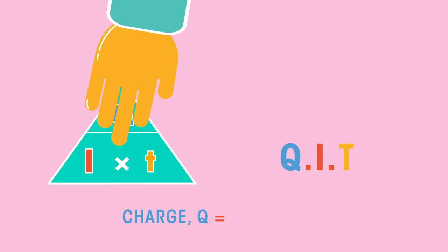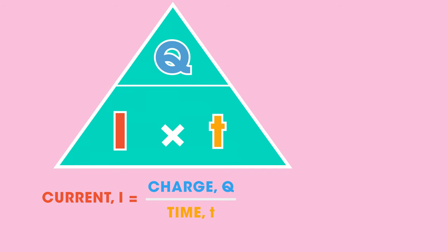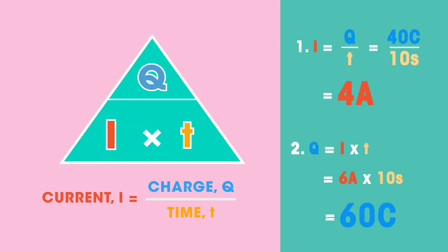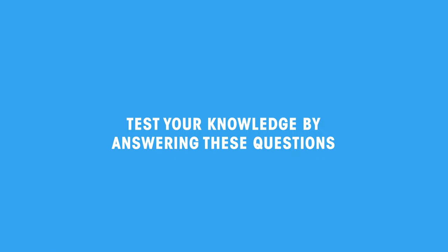So using the relationship between charge, current, and time, can you answer these questions? Pause the video and work it out. Did you get 4 amps and 60 coulombs? Now to finish with some more questions to test your understanding of all things current.